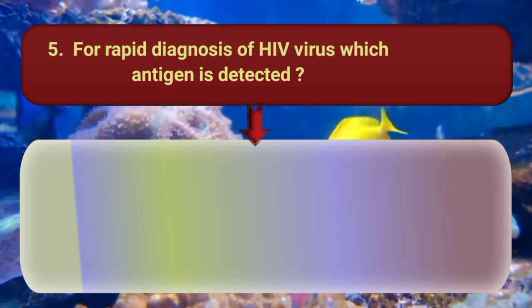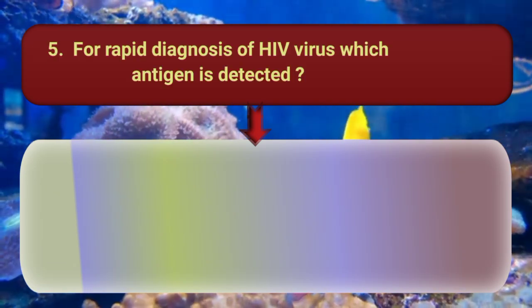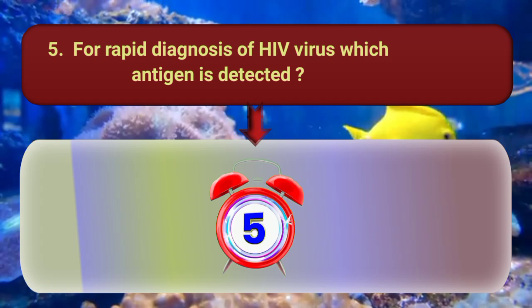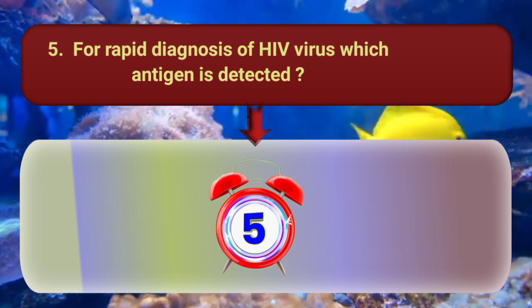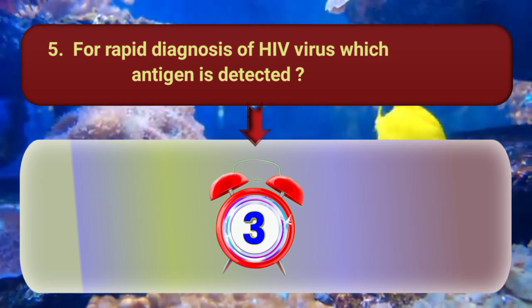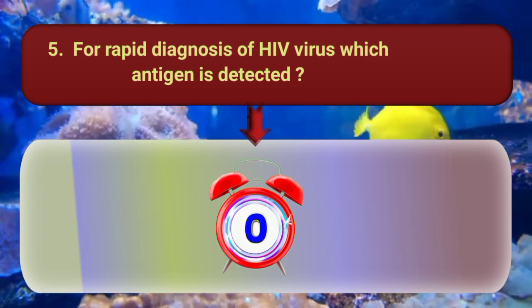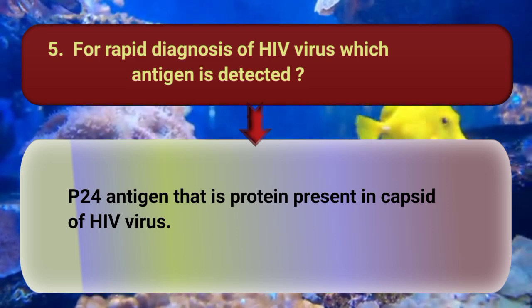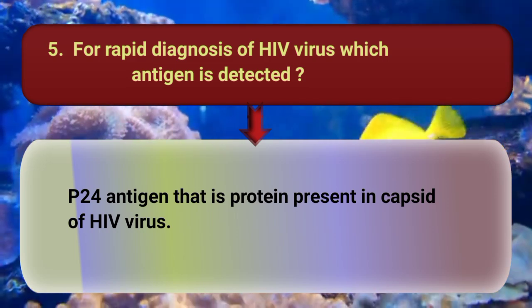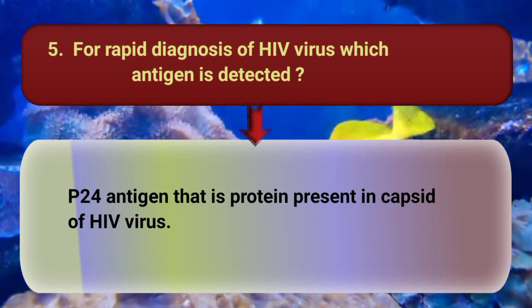For rapid diagnosis of HIV virus, which antigen is detected? The P24 antigen, which is a protein present in the capsid of the HIV virus, is detected.